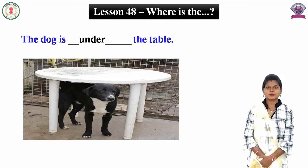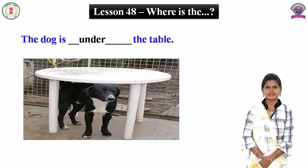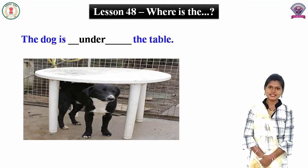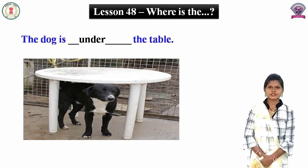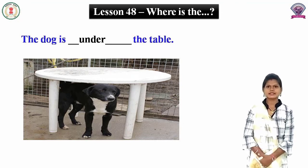Look at the picture. Picture में आपको क्या दिखाई दे रहा है? Where is the dog? Dog कहां है? वो table के नीचे है। नीचे के लिए हम कौन सा preposition लगाते हैं? Under. चलिए sentence को complete करते हैं — the dog is under the table.